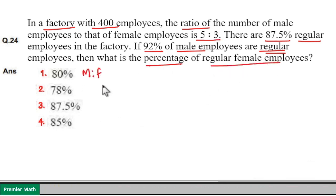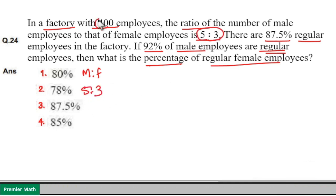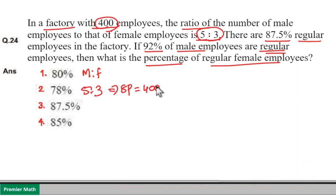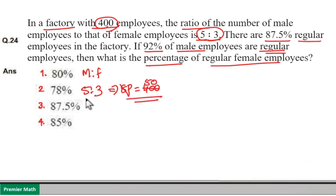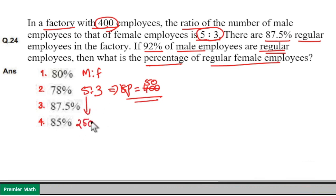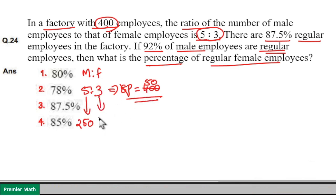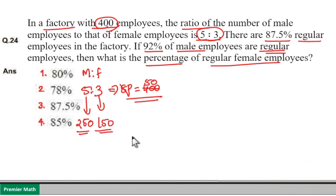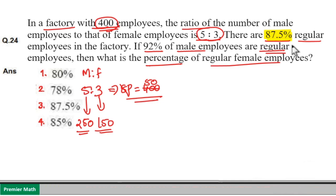Men and women ratio is 5:3 and total number of employees is 400. So 5 plus 3 equals 8 parts, which equals 400, meaning 1 part equals 50. So 5 parts gives total number of men: 5 × 50 = 250, and 3 parts gives total number of women: 3 × 50 = 150. So there are 250 men and 150 women in the factory.